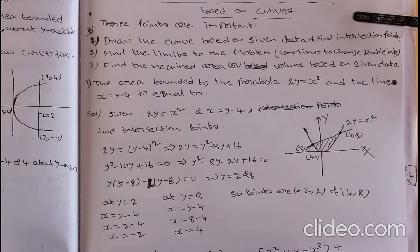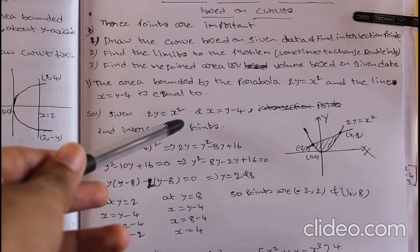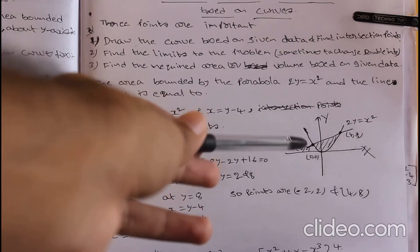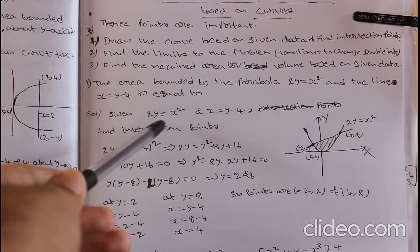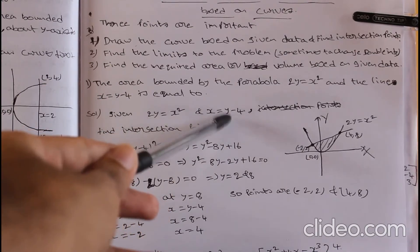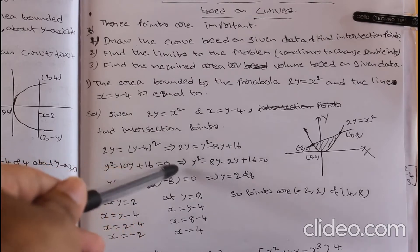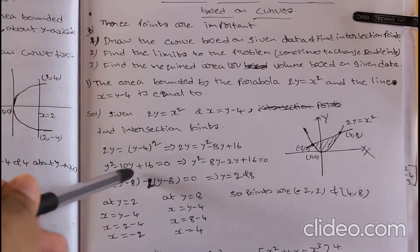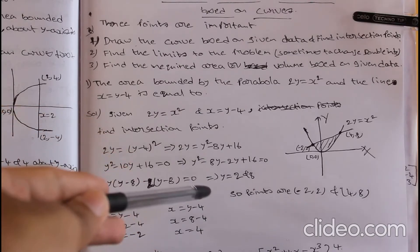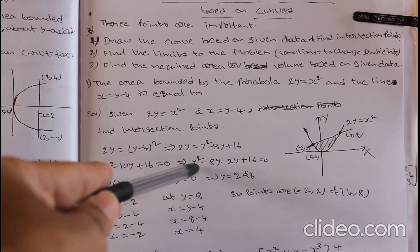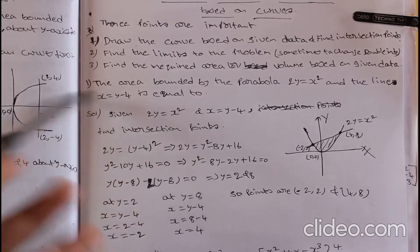Next, find the intersection points. From the given equations 2y = x² and x = y - 4, substitute x = y - 4 into the parabola: 2y = (y-4)² = y² - 8y + 16. Rearranging: y² - 10y + 16 = 0, which factors as (y-2)(y-8) = 0, giving y = 2 and y = 8.